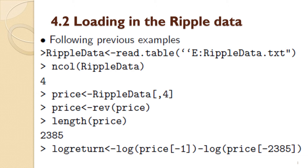The ncol command shows there are four columns in this dataset, so this means that the price has to be identified with the fourth column. You then need to reverse this in order to have everything in exactly the right chronological order from oldest to newest, and then you need to find the length of the price.